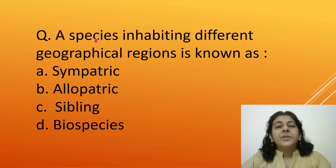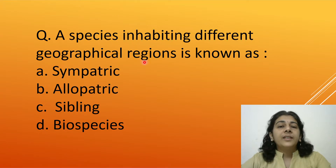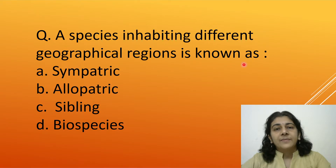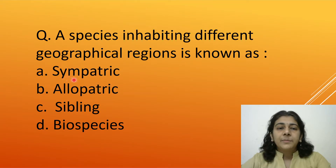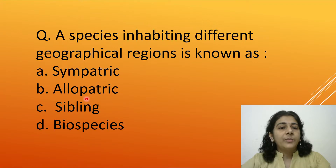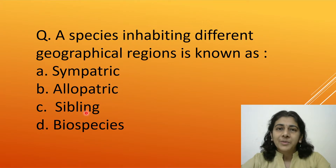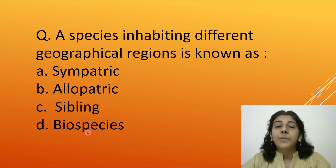A species inhabiting different geographical regions is known as: Sympatric species, Allopatric species, Sibling species, or Biospecies.